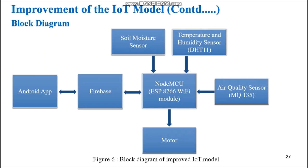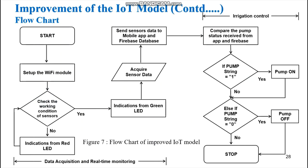The flowchart of the improved IoT model starts with setup of the Wi-Fi module. The program checks the working conditions of the sensors — if there is a connection issue or sensor fails to read data, the red LED indicates a fault; if everything is fine, the green LED lights up. Sensor data is then sent to the mobile app and Firebase database. The program retrieves the motor status from Firebase, and if pump status is 1, the pump turns on; if 0, the pump turns off. The flowchart is divided into two sections: data acquisition and real-time monitoring, and irrigation control.